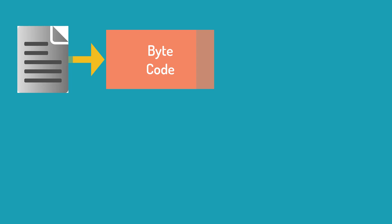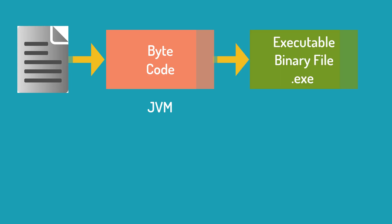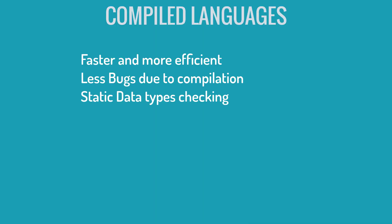In Java, Java code gets converted into JVM bytecode, which is platform independent, meaning you can run the same code across different operating systems like Windows, Linux, or Mac OS. That bytecode is then converted into binary code using the Java Virtual Machine — JVM. Compiled languages tend to be faster as the code is already converted into executable binary format, and they also tend to have fewer bugs because most of the language syntax has already been checked while compiling the source code.